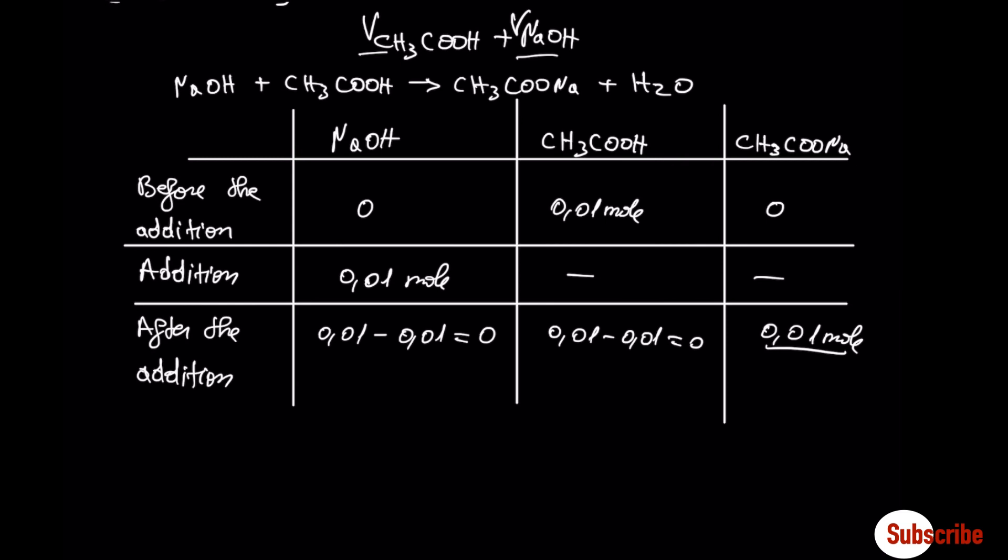From the table, we see that the number of moles that forms the salt is 0.01 mole. Because, as I said at the beginning, we are running in a stoichiometric way. Let's find the concentration of the salt.